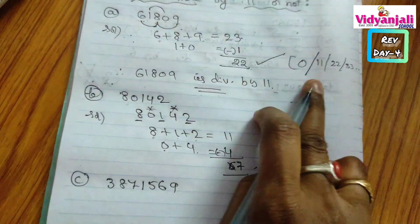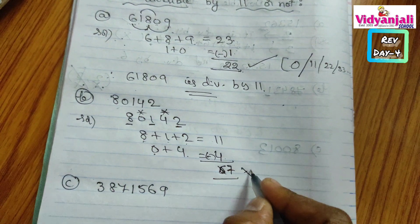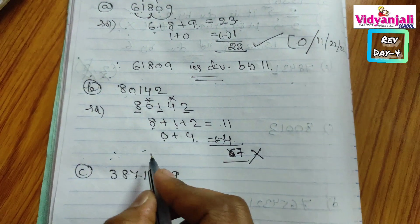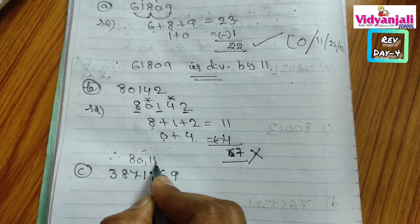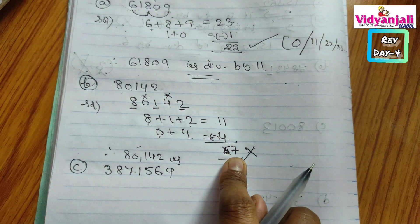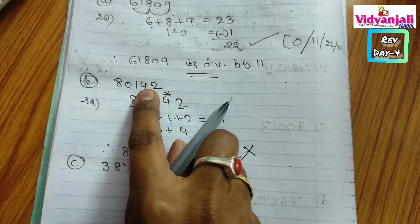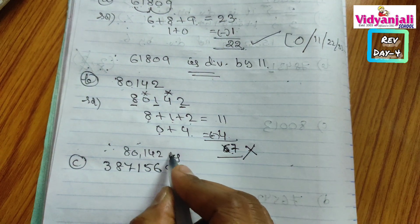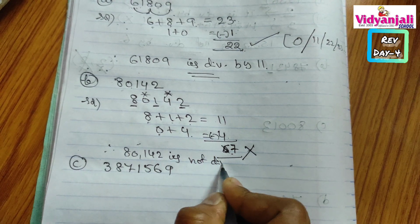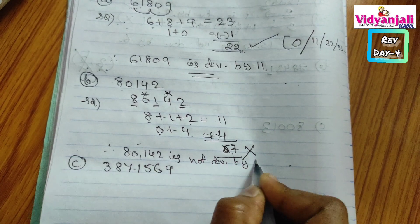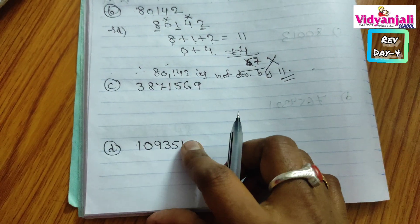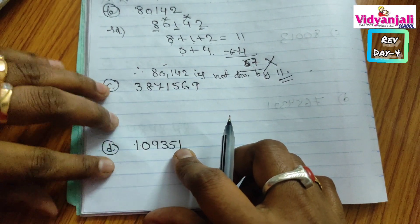Is 7 a multiple of 11, like 11, 22, 33? No. Then we say 80,142 is not divisible by 11. If we get 0 or any multiple of 11, then we say it is divisible by 11. We didn't get it, so therefore 80,142 is not divisible by 11. In this model I am giving two more questions for you to do as practice problems.